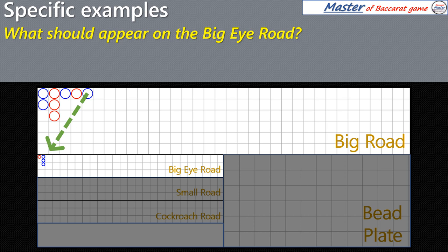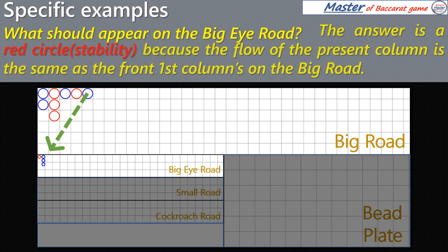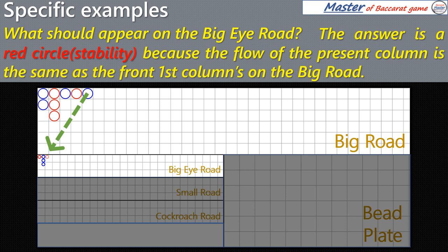What should appear on the Big Eye Road? The answer is a red circle, because the flow of the present column is the same as the front first column's on the Big Road.